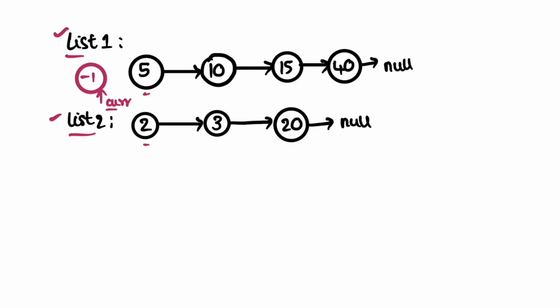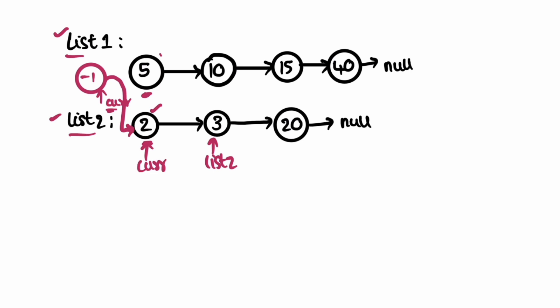We pick the two elements at the front of each list: five and two. Since two is the smallest, we connect current's next to list two. Since we picked from list two, we move list two forward to point to the next element. List one stays as is because we haven't processed it yet. Current then moves to the last processed element so it can point to the next node.